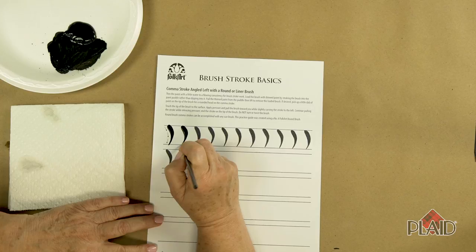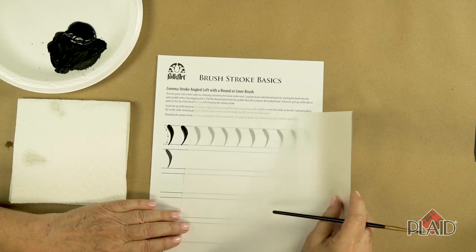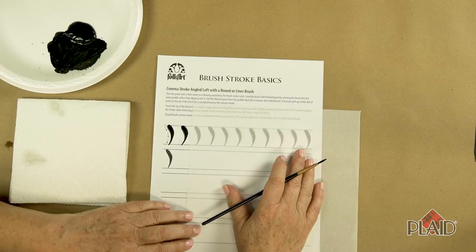Another way you can use our brush stroke basics guide is to lay a sheet of artist tracing paper or parchment paper directly on top of the brush stroke guide and practice directly on that tracing paper.